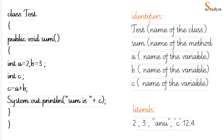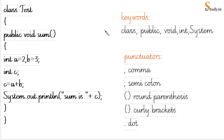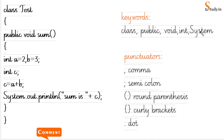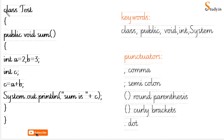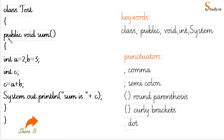Now what is a keyword? If you see here: 'class' is a keyword, 'public' is a keyword, 'void' is a keyword, 'int' is a keyword, 'System', 'out', 'println' are keywords. Keywords are provided to us by the language — they are given to us by Java — and we cannot use them in whichever way we want. For example, 'class' must be written in small letters; if you write it with a capital C it will not work. Similarly, 'System' must have a capital S.